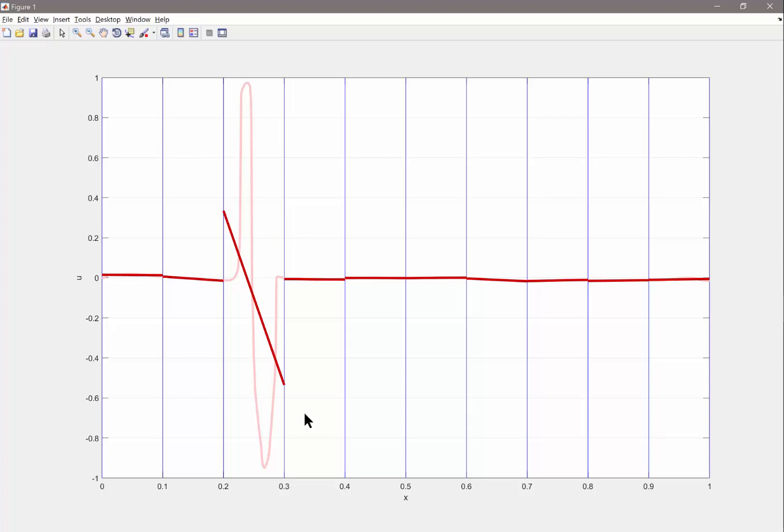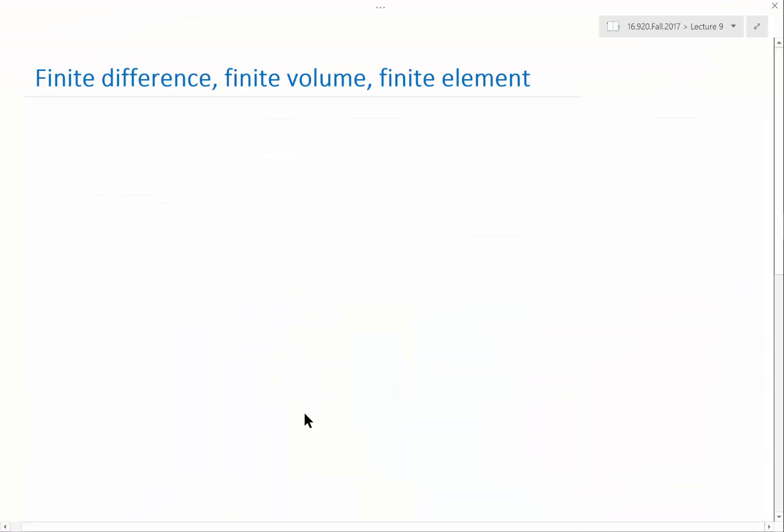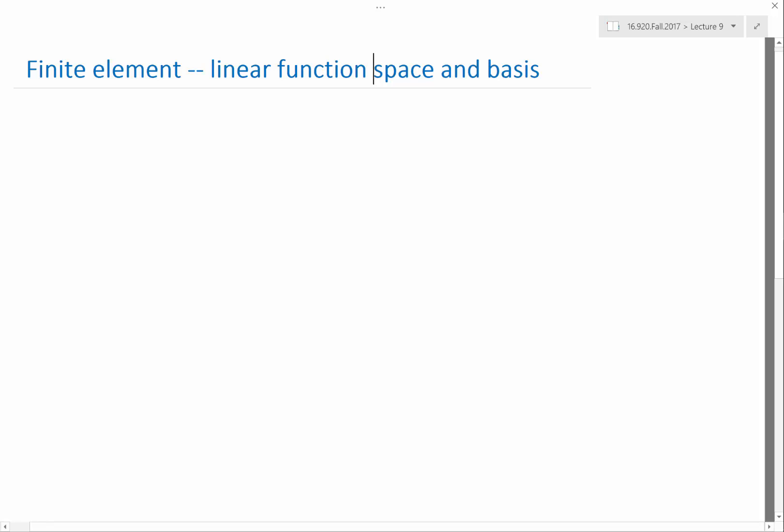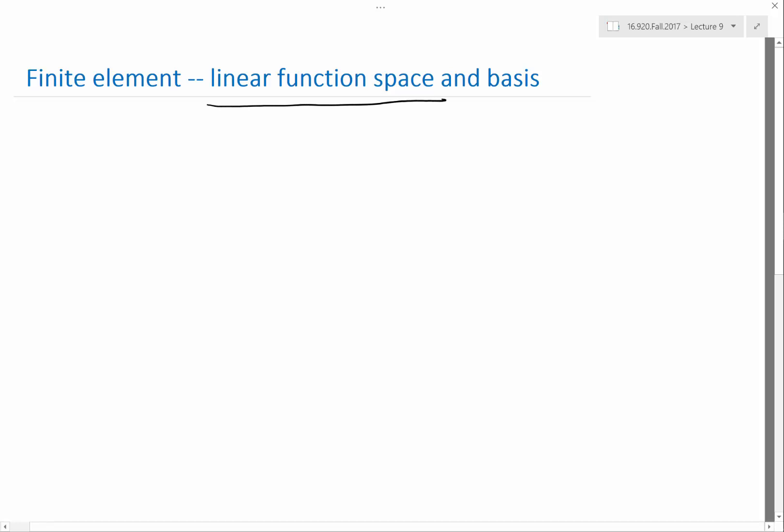So I said a finite element chooses within a certain class of functions. So what is that class of functions? So for that to be rigorous, let me define that. The class of functions I'm choosing, in the simplest case of finite element, is called a linear function space.